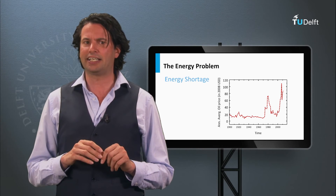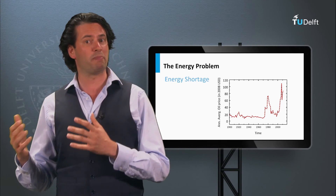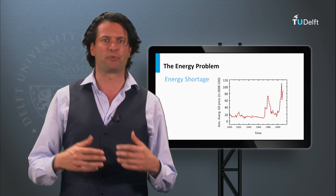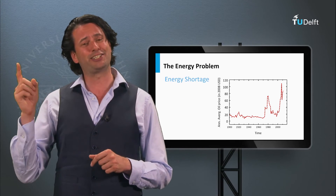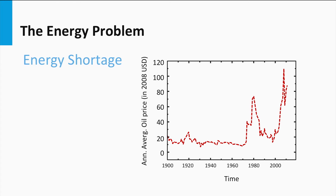The increasing demand for energy has economic impact as well. If there is more demand for a product while supply does not change much, the product will get more expensive — and this is also true for energy. As an example, we show a plot of the annual average oil price normalized to the 2008 US dollar value. Prices went up during the oil crisis in the 1970s, when some countries stopped producing and trading oil. A second era of higher oil prices started at the beginning of this millennium, driven by increasing demand from new growing economies.